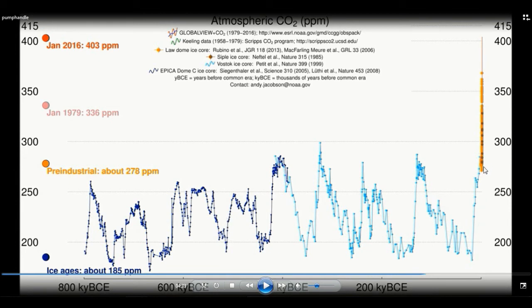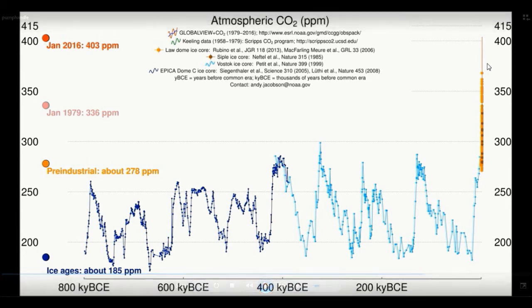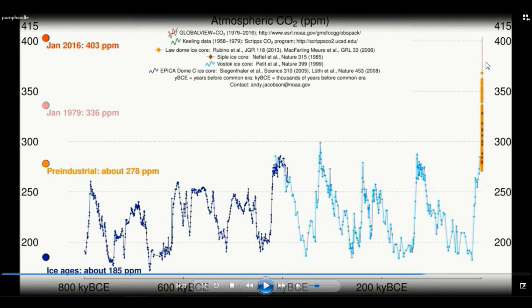Whereas in modern day times, which is represented by the orange dots here and this red line here, the carbon dioxide concentrations are much, much higher. This is caused by humans burning fossil fuels and releasing extra carbon dioxide into the atmosphere. So we are well, well outside the natural range now.